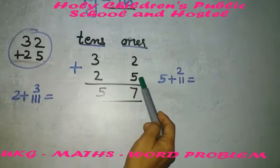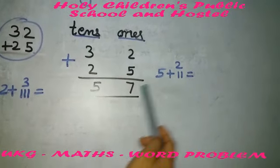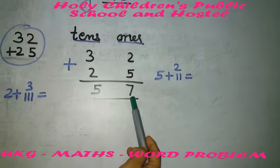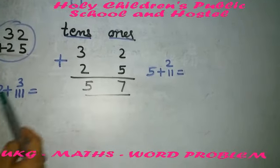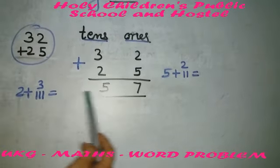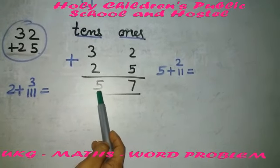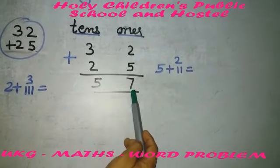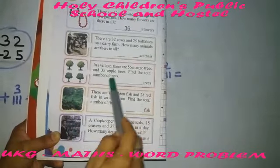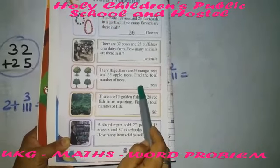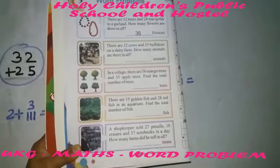Let us add it. 5 plus 2 will make 7. Now 2 plus 3 will make 5. So the answer will be 57. In this way you will complete the word problem addition. Thank you.